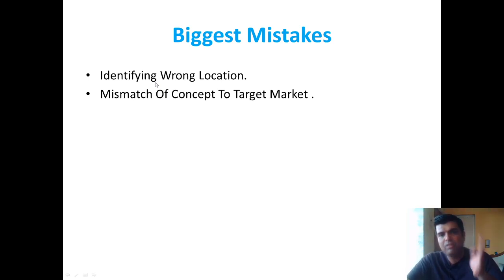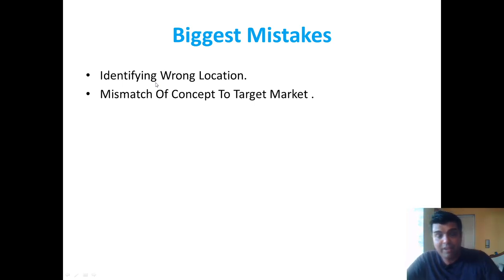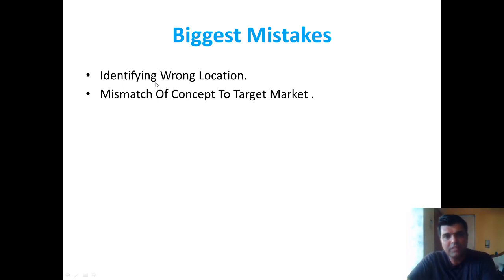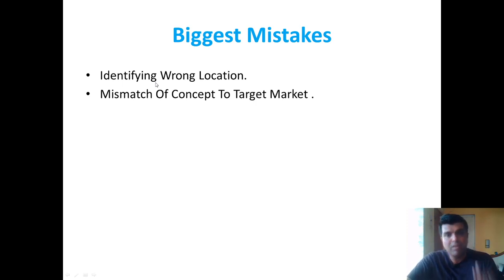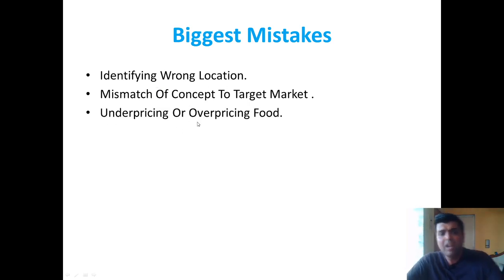Second is a mismatch of the concept. People try to sell different things to different people — it's not going to work. For example, you can sell Italian food to maybe 5–10% of Maharashtrian people, but for the remaining 90% you need to sell Indian, Maharashtrian, or Punjabi food. Make sure you match your concept with the type of people in your area.